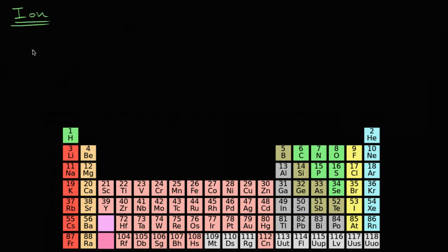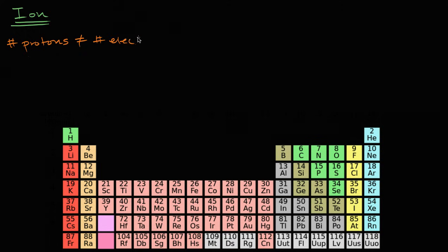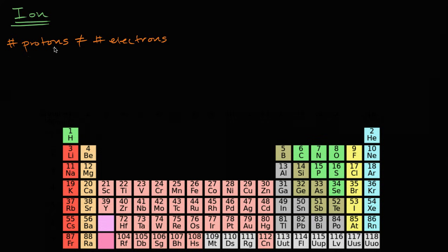Neutrons are also a constituent of atoms, but neutrons are neutral. What you're going to get your charge from are your protons or electrons. So you're going to have a net charge if your number of protons — and this is for an atom or a molecule, a molecule's just a bunch of atoms bonded together — does not equal the number of electrons. You can have positive ions if the protons are more than the number of electrons, and you can have negative ions if the number of electrons are greater than the number of protons.